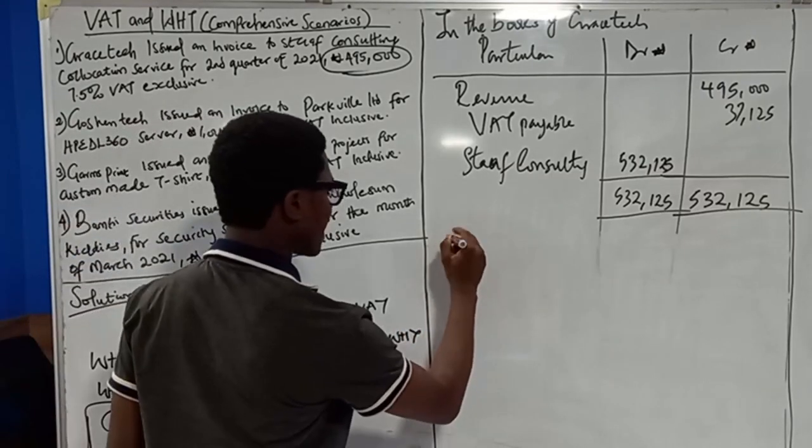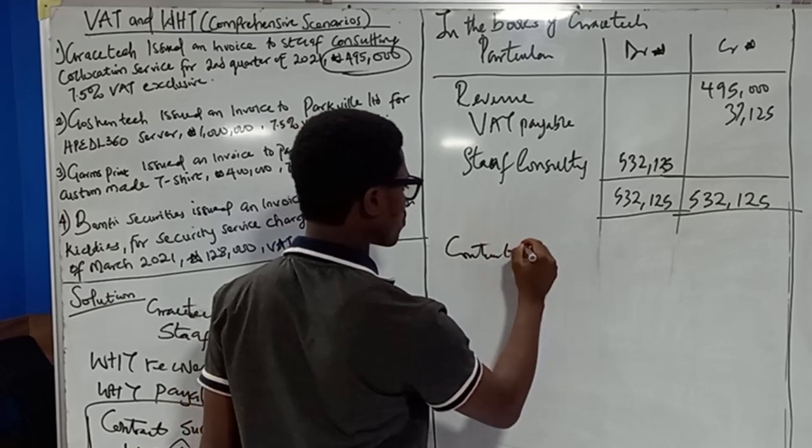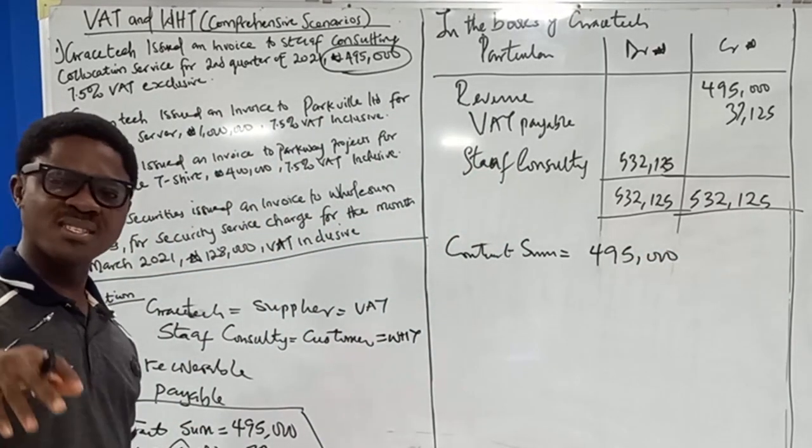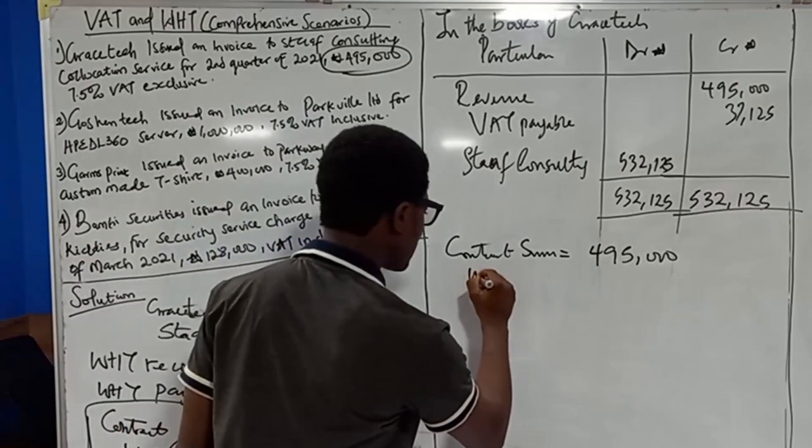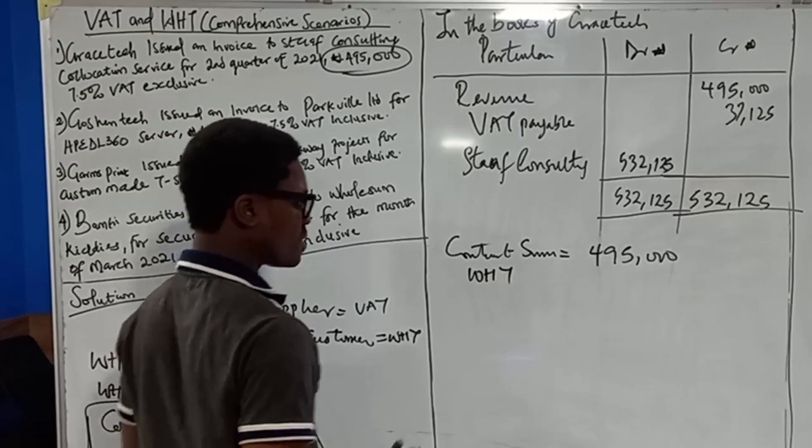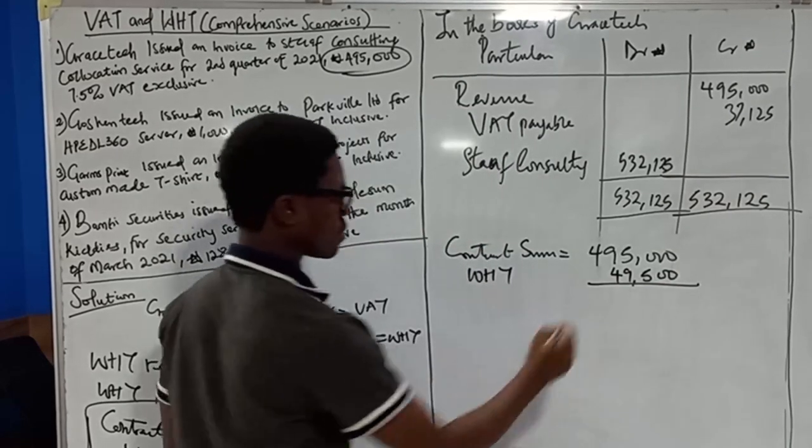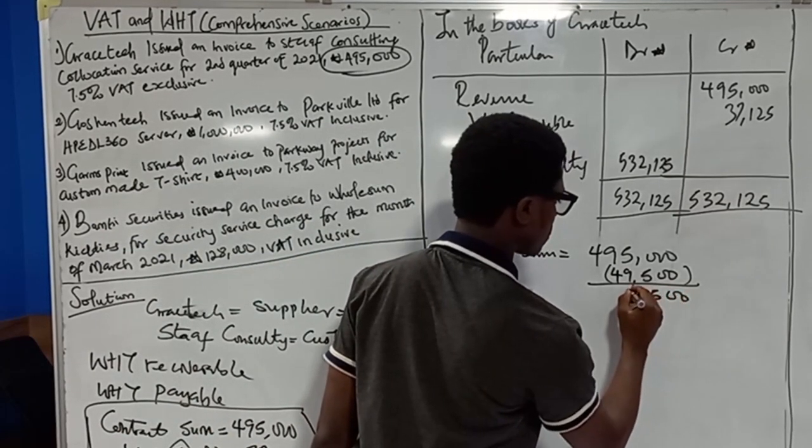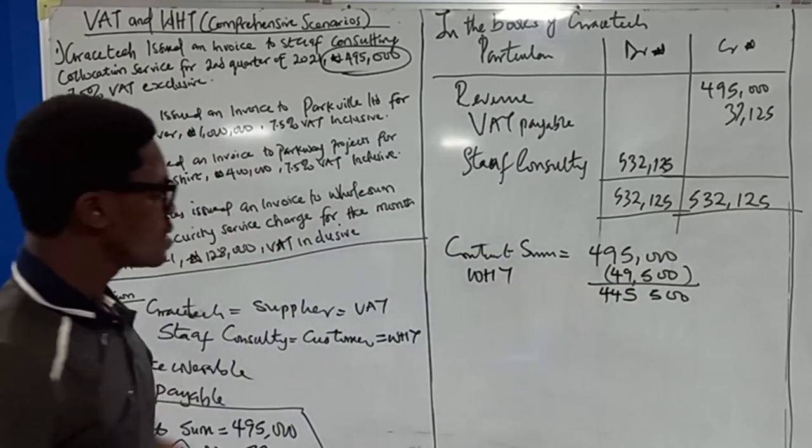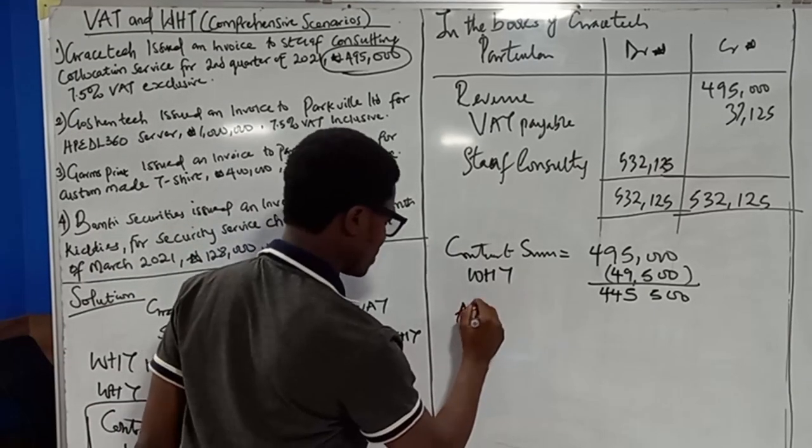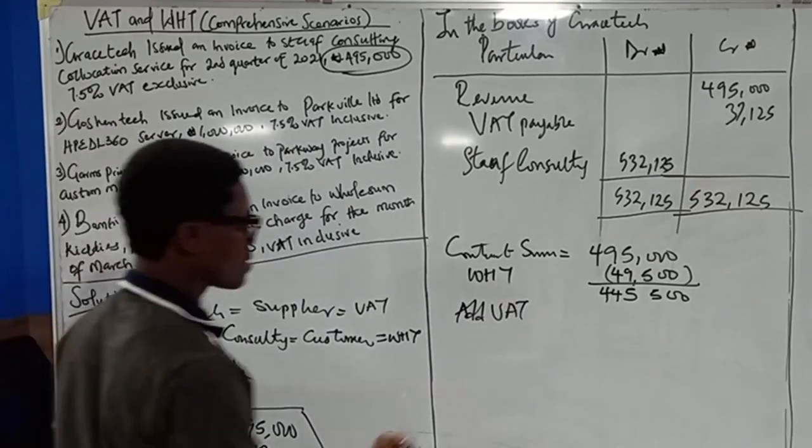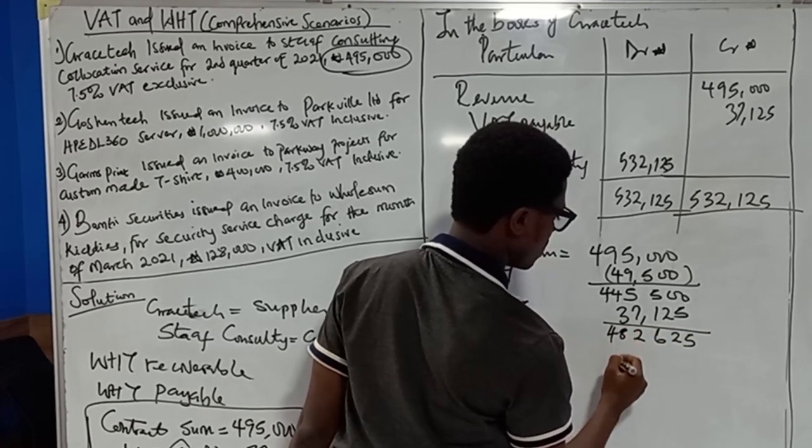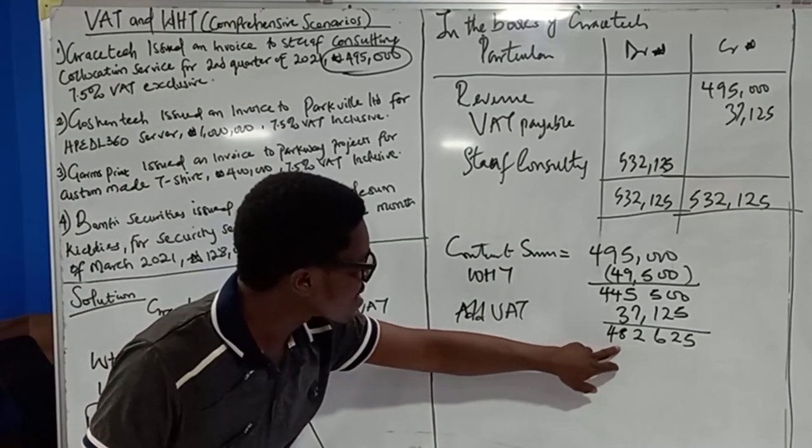Now in the books of Staff Consulting, before passing the accounting entry, there will be need to do some working before arriving at what will eventually be paid to GraceTech. In the books of Staff Consulting, it is important to do the computation of what will eventually be paid to GraceTech after deducting withholding tax. We need to put down the contract sum, which is 495,000. The customer, which is Staff Consulting, will deduct withholding tax. The withholding tax, 10%, is 49,500.